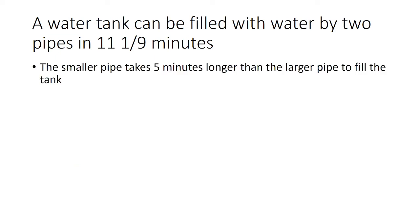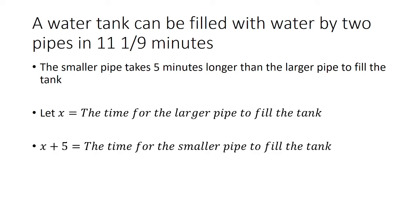Let's start off with the smaller pipe takes five minutes longer than the larger pipe to fill the tank. If we let x equal the time for the larger pipe to fill the tank, x plus 5 is going to be the time for the smaller pipe to fill the tank, since it takes five minutes longer.